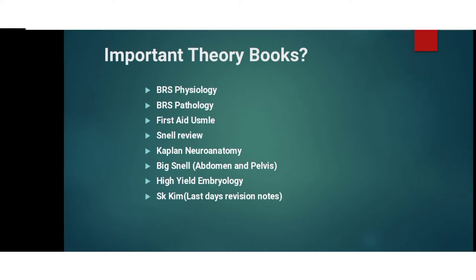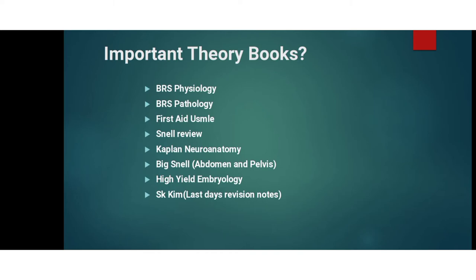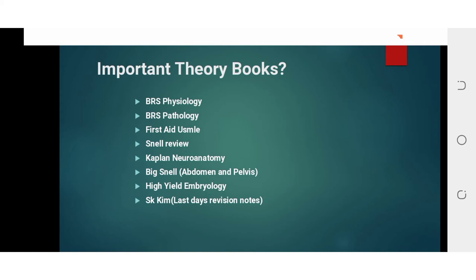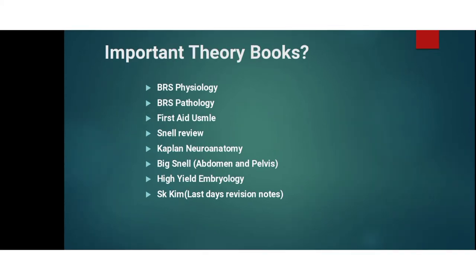Start with BRS Physiology — cover the syllabus portion, then First Aid USMLE, then High Yield Embryology. This way you go system-wise: BRS Physiology for physio, BRS Pathology for patho, anatomy portion, embryology portion, pharmacology portion, basic patho — all covered through First Aid chapters.